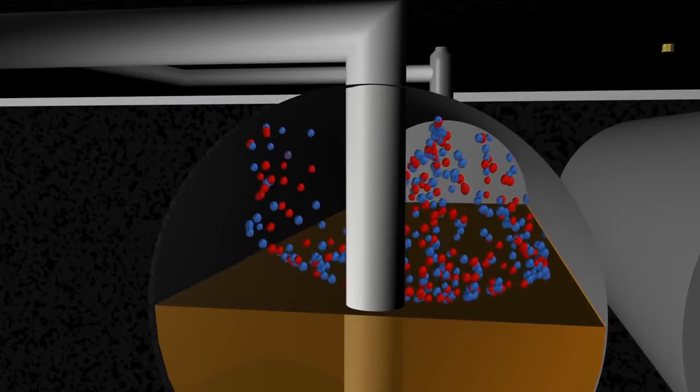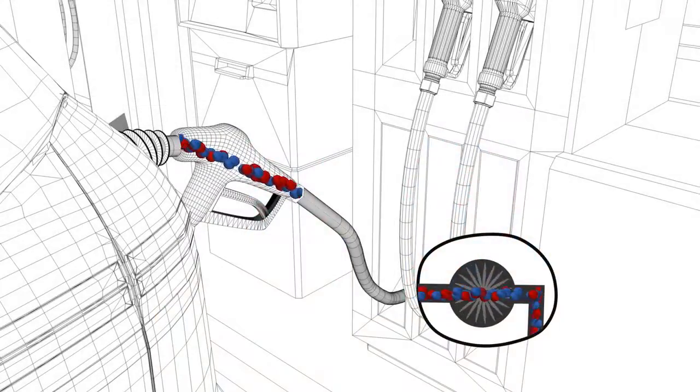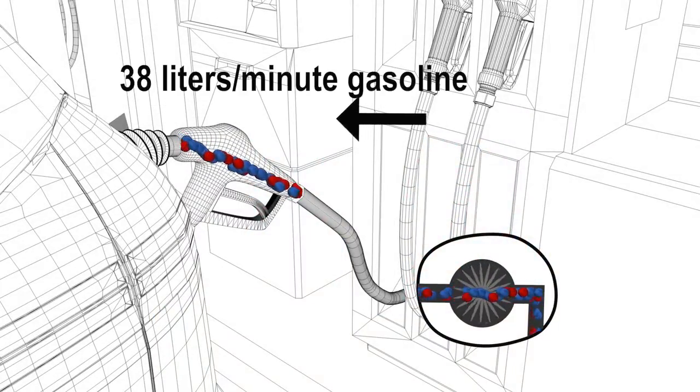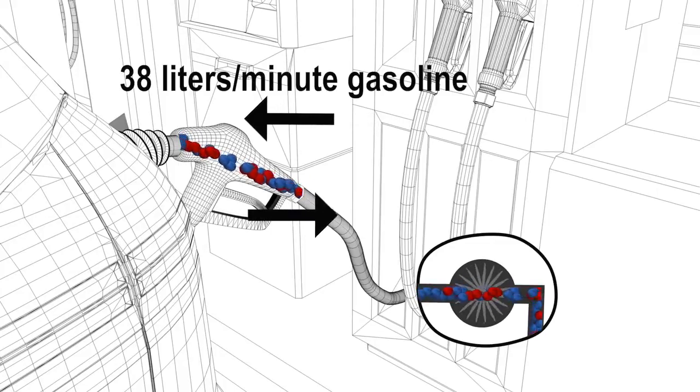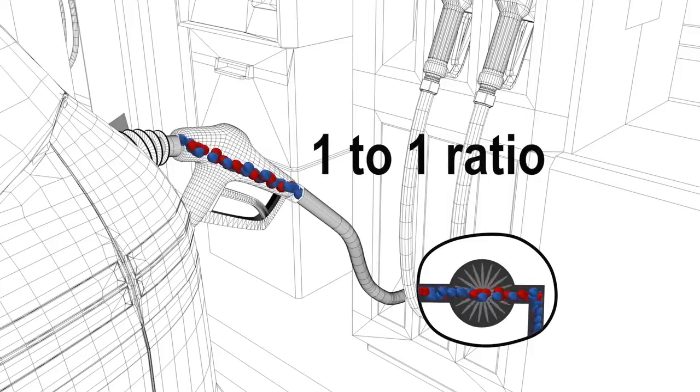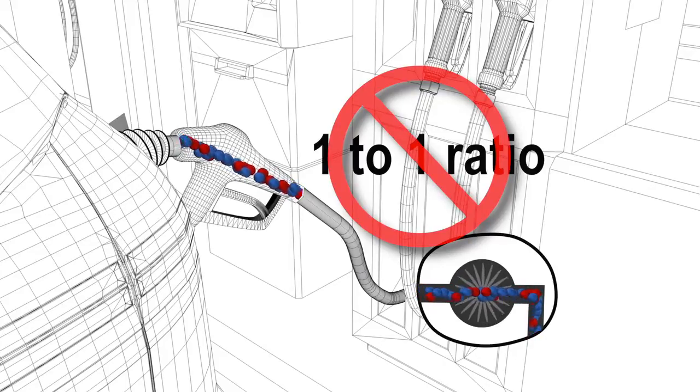The volume of vapor collected is set manually and is based on how the system is calibrated. For example, if the fuel dispenser is set to deliver 38 liters of gasoline per minute, the stage 2 pump can be set to draw in 38 liters per minute of the vapor mixture. In other words, a 1 to 1 ratio. However, the use of a fixed ratio is based on the incorrect assumption that an equal volume of vapor mixture is generated. Here is why this assumption is incorrect.